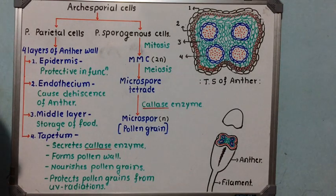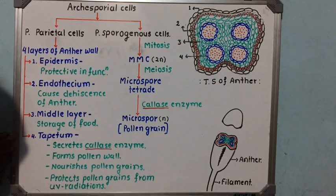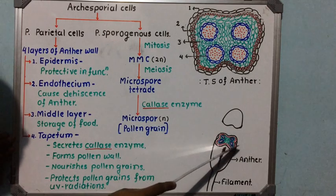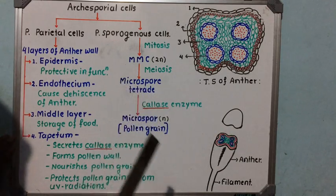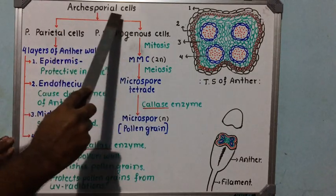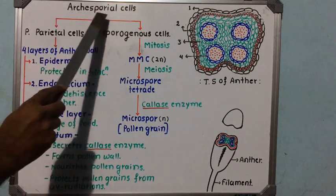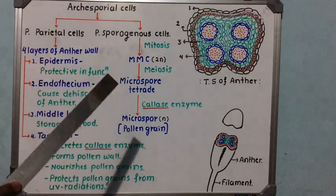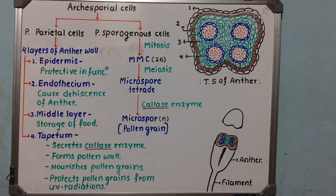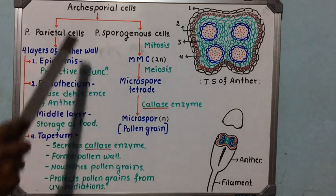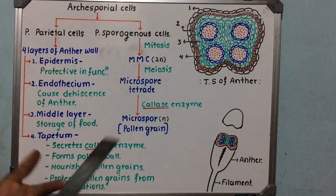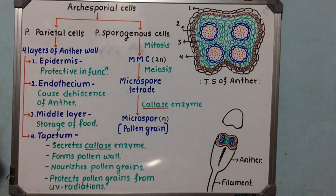The cells found in the peripheral region of the young anther are known as hypodermal cells, also called archesporial cells. These archesporial cells have the capacity to produce more cells which are capable of producing new tissues. Let us study what specialized cells are produced by these archesporial cells and how they differentiate to produce new tissues.